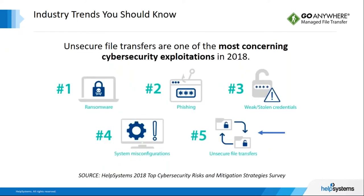The next few slides show statistics from a survey we conducted showing cybersecurity trends and concerns. Here we're looking at the top five most concerning cybersecurity exploits of 2018. Unsecure file transfer made the list. Number three — weak or stolen passwords — could be because of using insecure protocols like FTP during transmission, passing passwords in clear text. Number four — system misconfigurations — could be caused by manual processes by untrained individuals. Automation of secure protocols and processes could prevent some of these concerns.